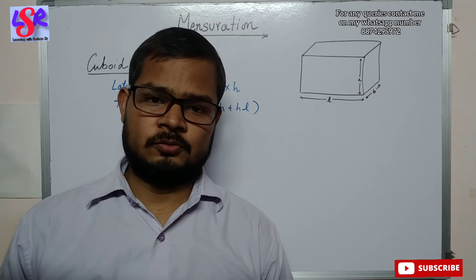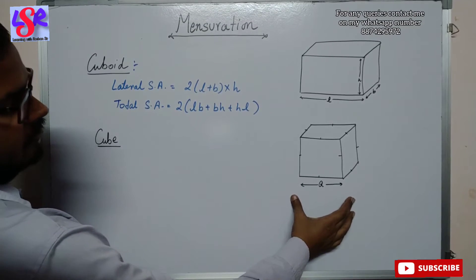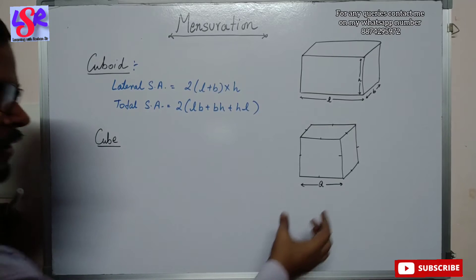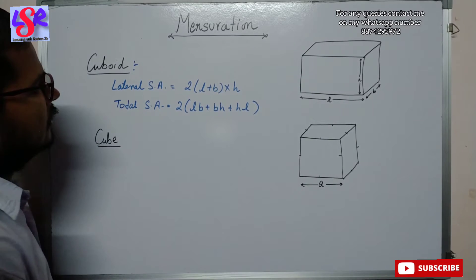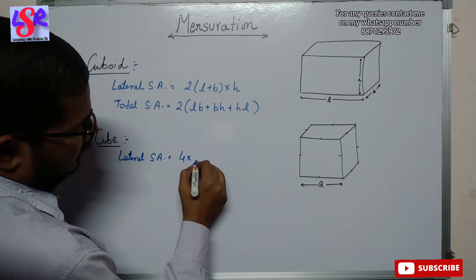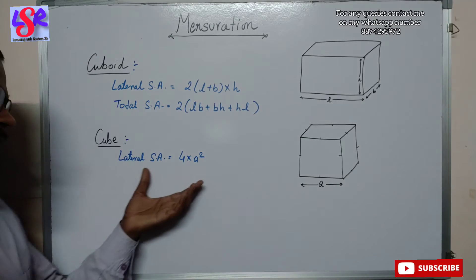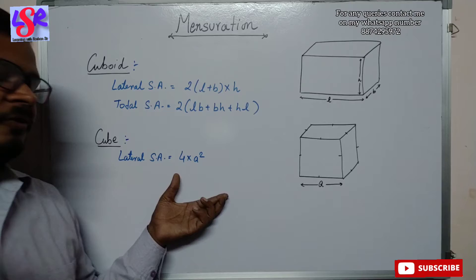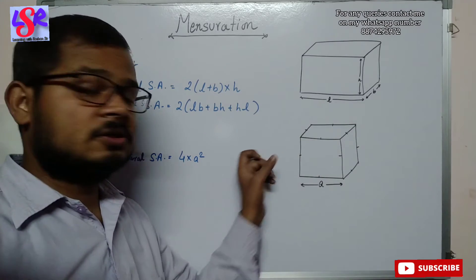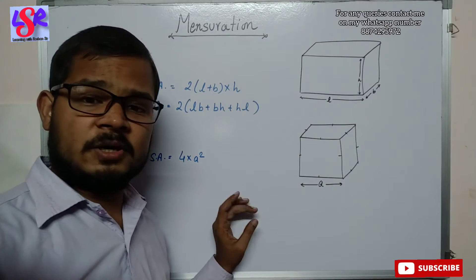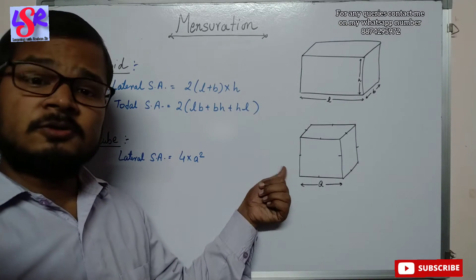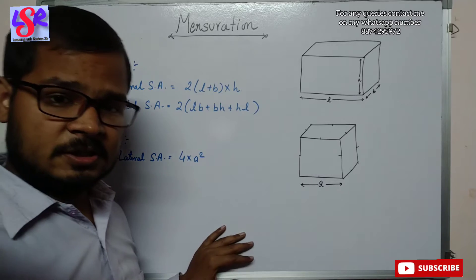Now let's go to the cube. Here we have a figure of a cube in which all edges are of equal length and we have taken the length as A. The lateral surface area of this cube is 4A². This is also calculated by the formula perimeter × height. The shape of the cross-section is a square, so the perimeter is 4A, and 4A × A gives us 4A².